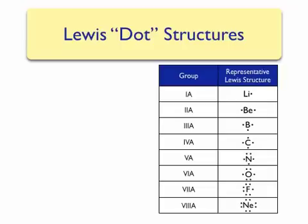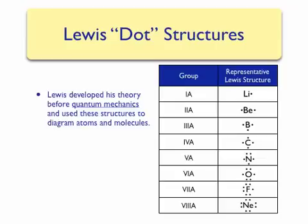The noble gas rule is a very powerful predictive tool that is still used today in general chemistry and advanced chemistry classes as well. However, it's important to note that Lewis came up with his noble gas rule about 10 years before quantum mechanics was developed. Therefore, he had no knowledge of orbitals and could not write electron configurations for atoms.